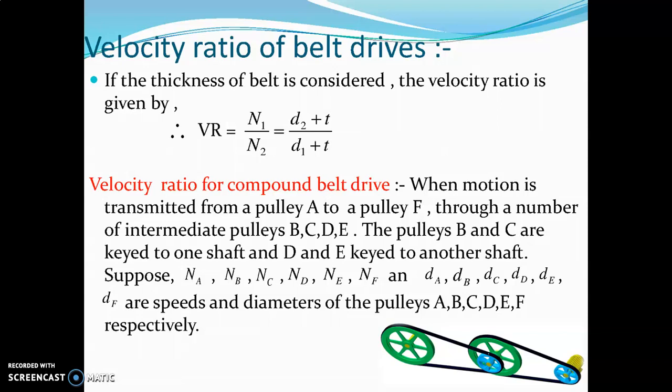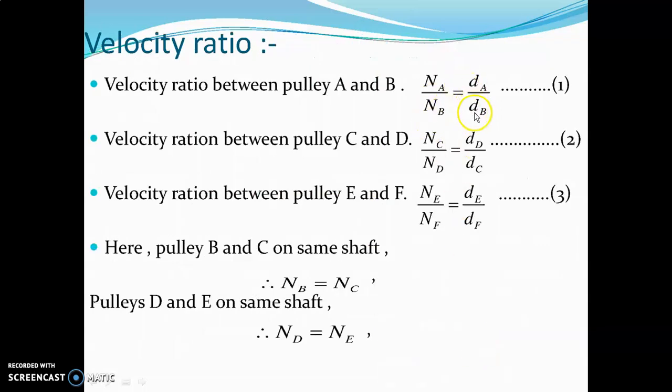Now, if the motion is transmitted from pulley A to F, with pulleys B, C, D, E in between, we can apply the equation. So we have nₐ upon n_b equals d_b upon d_a.